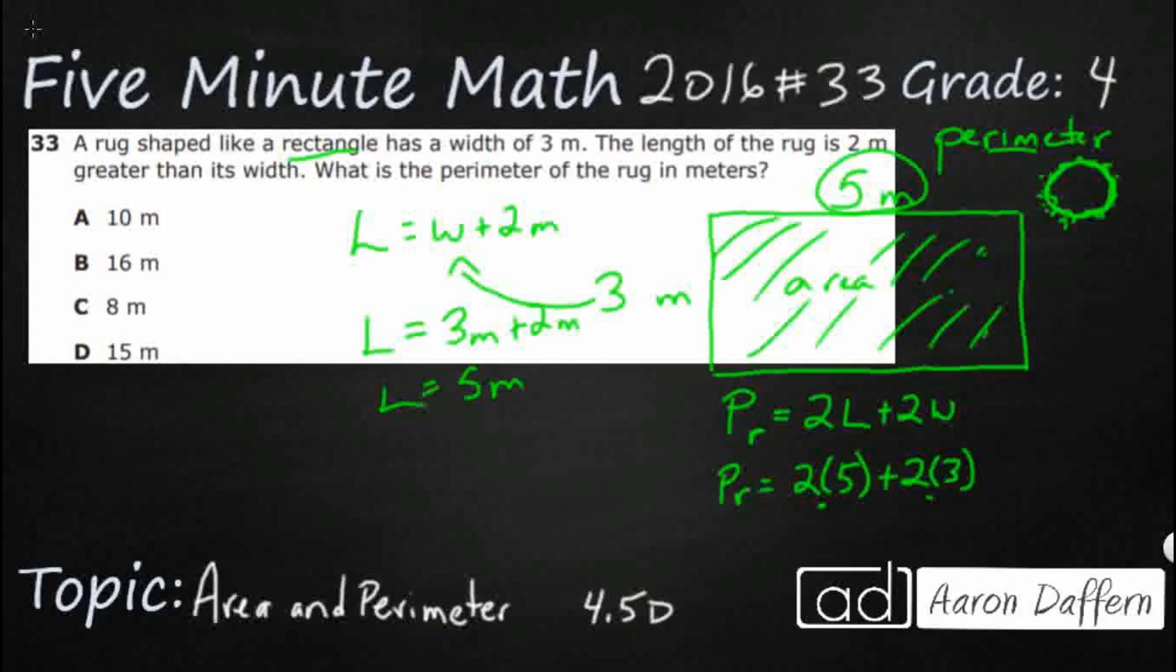Now we're going to get into order of operations a little bit more in fifth grade. But what we do is we multiply first, then we add. So let's multiply. 2 times 5, that's going to be 10. 2 times 3, that's going to be 6. Add those together and you get your 16 meters.